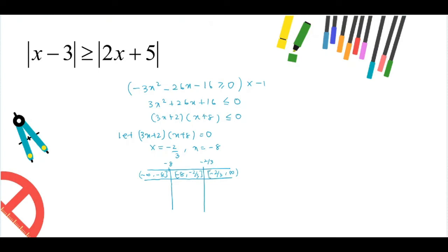Then write down the test value for each interval. Any value that lies between minus infinity and minus 8 is minus 9. Any value that lies between minus 8 and minus 2 over 3 is minus 5. Any value that lies between minus 2 over 3 to infinity is 6.